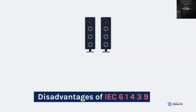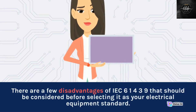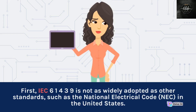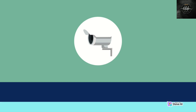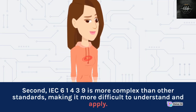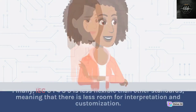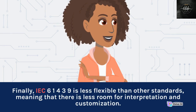Disadvantages of IEC 61439. There are a few disadvantages of IEC 61439 that should be considered before selecting it as your electrical equipment standard. First, IEC 61439 is not as widely adopted as other standards, such as the National Electrical Code (NEC) in the United States. This can make it more difficult to find products and services that comply with IEC 61439. Second, IEC 61439 is more complex than other standards, making it more difficult to understand and apply. Finally, IEC 61439 is less flexible than other standards, meaning that there is less room for interpretation and customization.